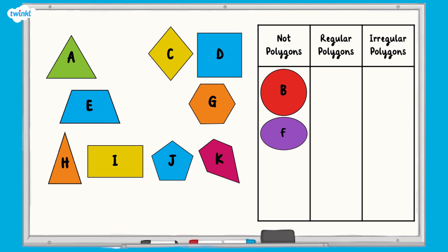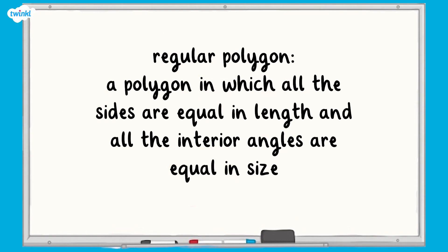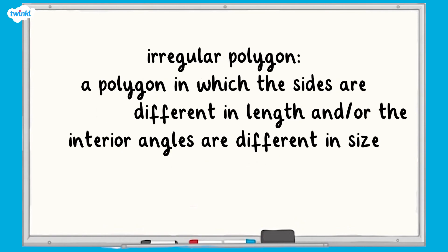Now that we've identified the polygons, we can identify which are regular polygons and which are irregular polygons. A regular polygon is a polygon in which all the sides are equal in length and all the interior angles are equal in size. An irregular polygon can have sides that are different in length or interior angles that are different in size.